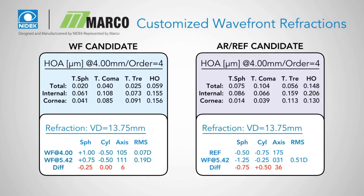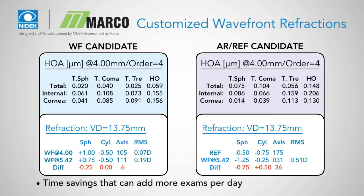Customized wavefront refractions — WF versus AR — will tell you which patients have higher order aberrations that may not be correctable, and which will only need minimal corrections to achieve 20/20, providing time savings that can add more exams per day.